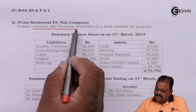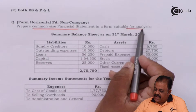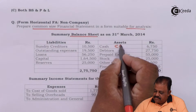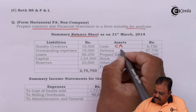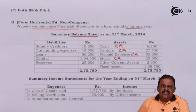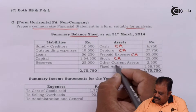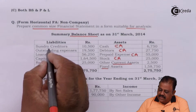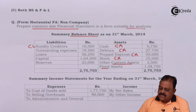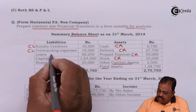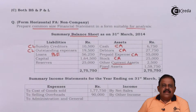Prepare a common size financial statement in a form suitable for analysis. The summary balance sheet includes: cash as current asset, debtors as current asset, prepaid expenses as current asset, stock as current asset, other current assets, fixed assets, sundry creditors as current liabilities, outstanding expenses as current liabilities, and loans as borrowed funds.